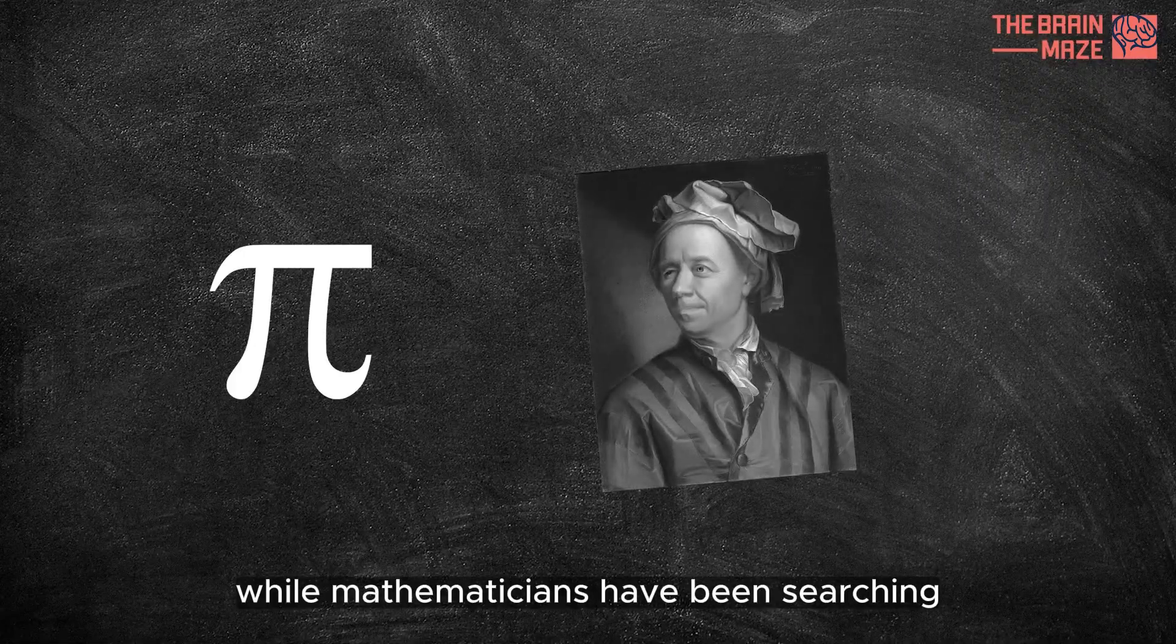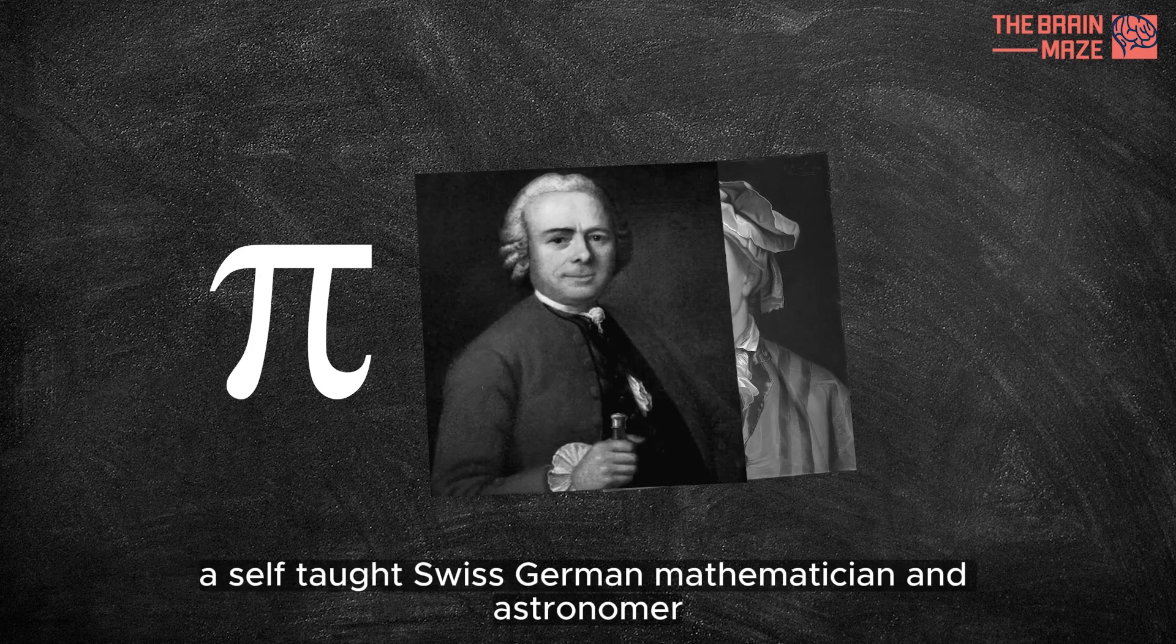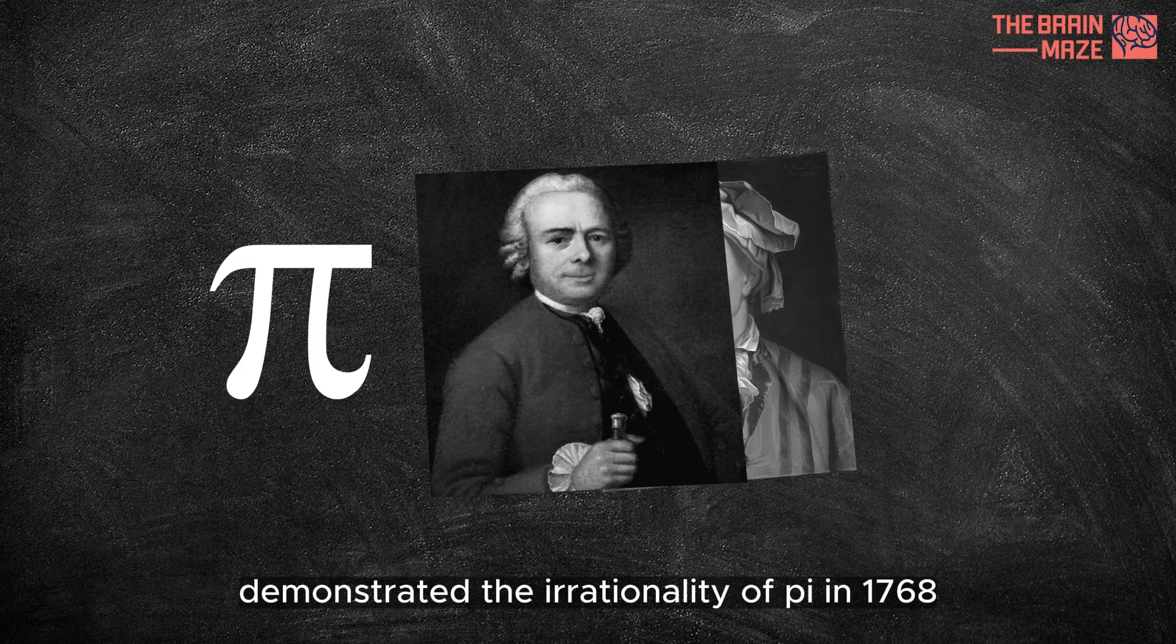While mathematicians have been searching for those patterns for centuries, Johann Lambert, a self-taught Swiss-German mathematician and astronomer, demonstrated the irrationality of Pi in 1768.